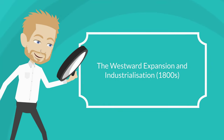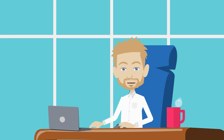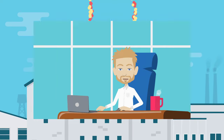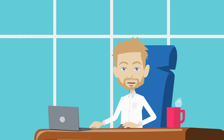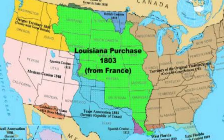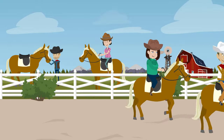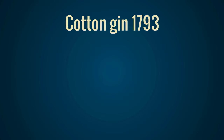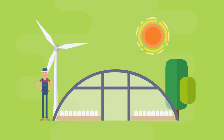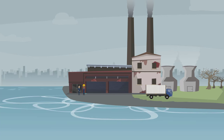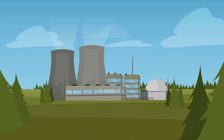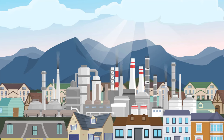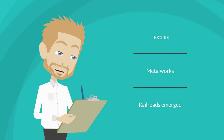The Westward Expansion and Industrialisation. The 19th century witnessed rapid westward expansion and industrialisation as the United States sought to expand its territory and economic influence. The Louisiana Purchase of 1803 and the Oregon Trail facilitated migration and settlement in the west, leading to development of agriculture, mining and trade. Meanwhile, the invention of the cotton gin in 1793 revolutionised cotton production and fuelled the economic growth of plantation economies in the south. The Industrial Revolution transformed the US economy as mechanisation, steam power and the building of factories spurred manufacturing, urbanisation and technological innovation. Key industries such as textiles, metalworks and railroads emerged, laying the groundwork for the rise of industrial capitalism.